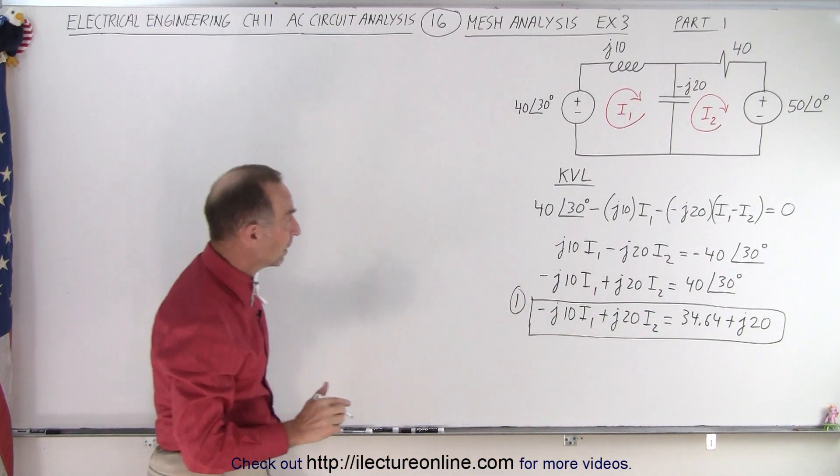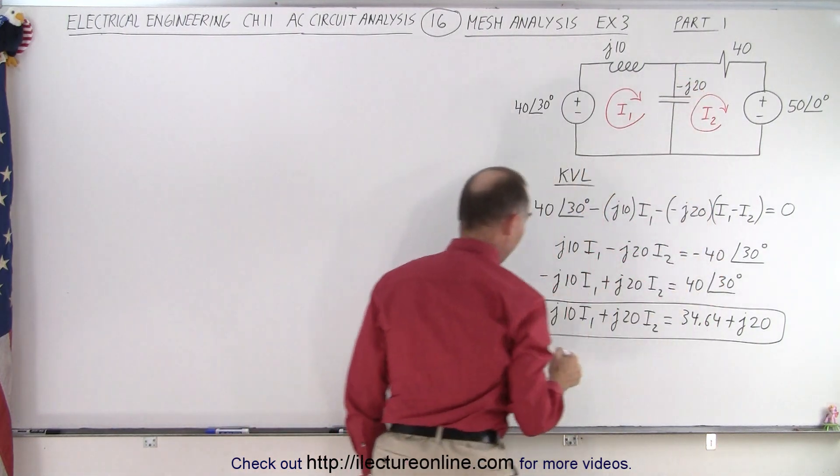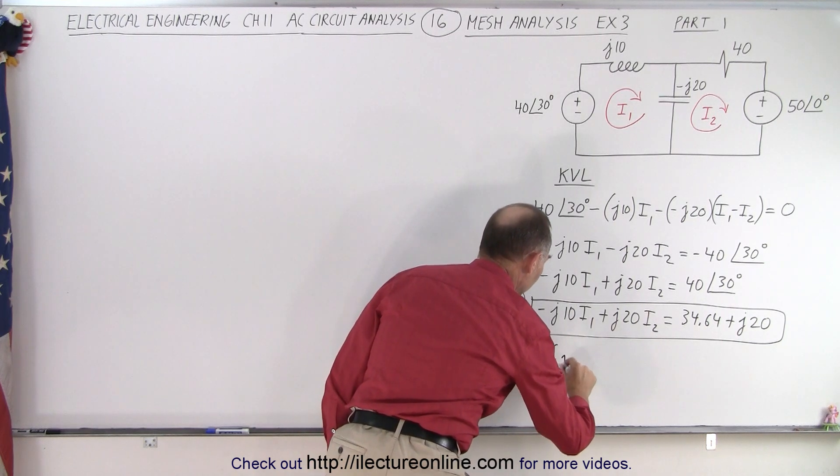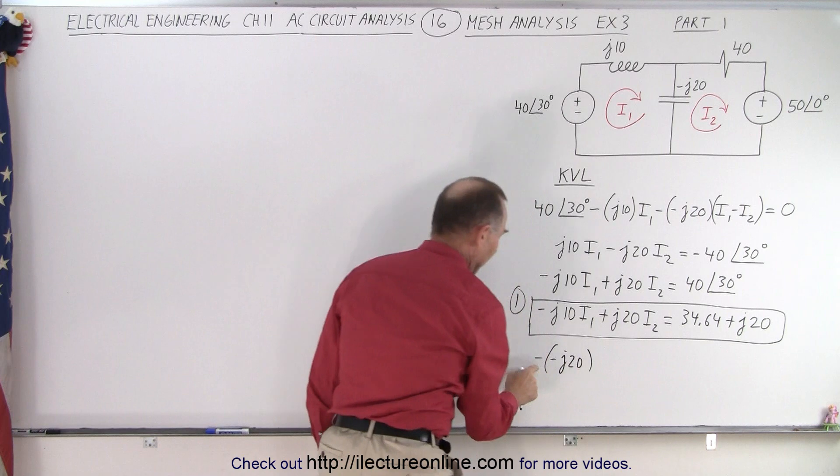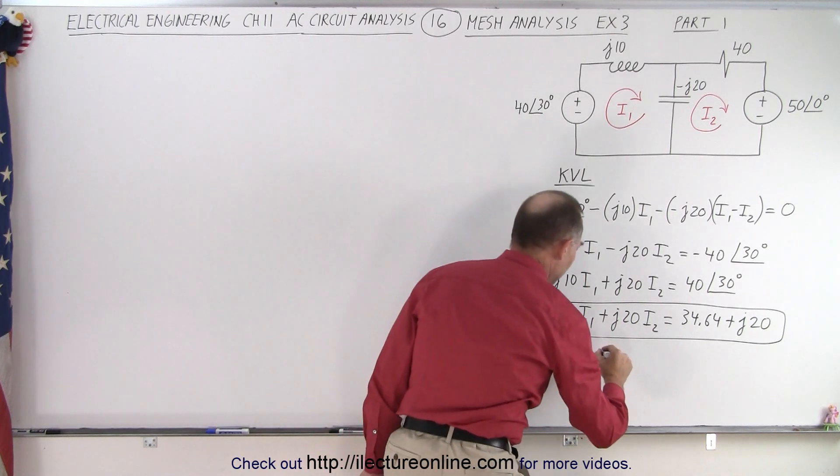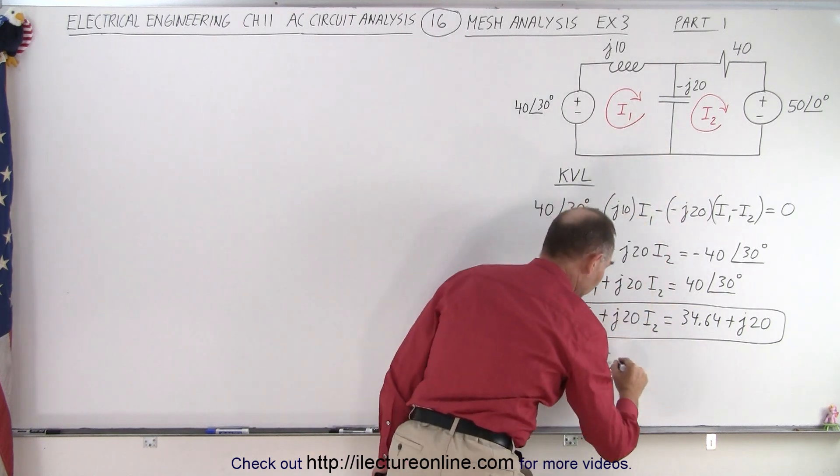Now we're ready to go to mesh 2. Starting at this corner right here going across the capacitor. It's a voltage drop so minus J20. Notice again a voltage drop but I'm dropping a minus J20. And that would be times I2 but I'm going against the current I1 so minus I1.